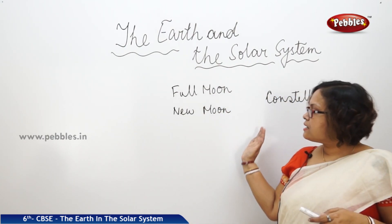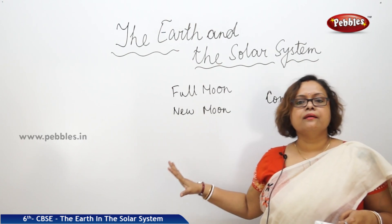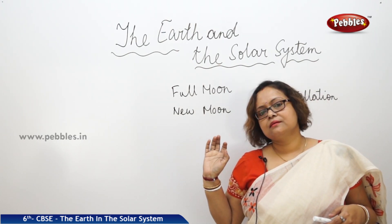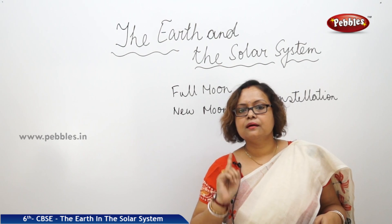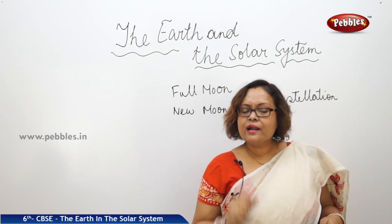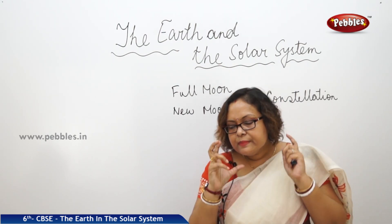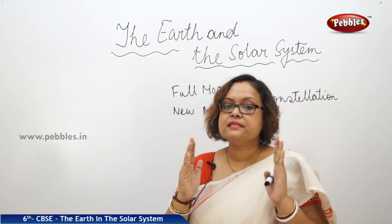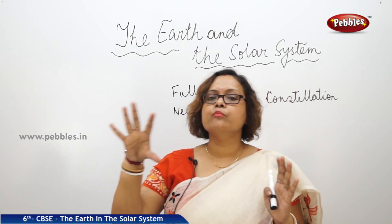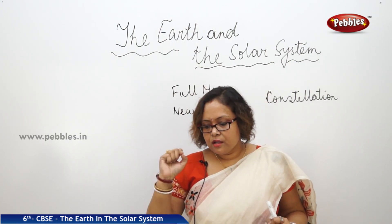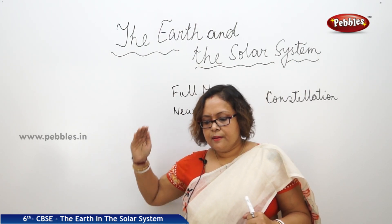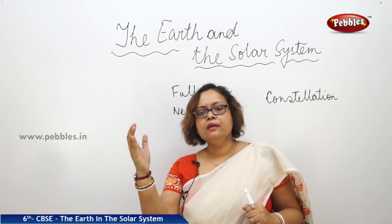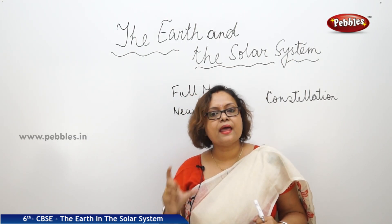Now let us come to our own Earth. What is Earth? Earth is a planet. What is a planet? The meaning of the word planet is 'wanderer' — those who are moving from one place to another are called planets. This is the literal meaning of the word planet: wanderer. It comes from the Greek word 'planetes,' from which we adopted this word planet.